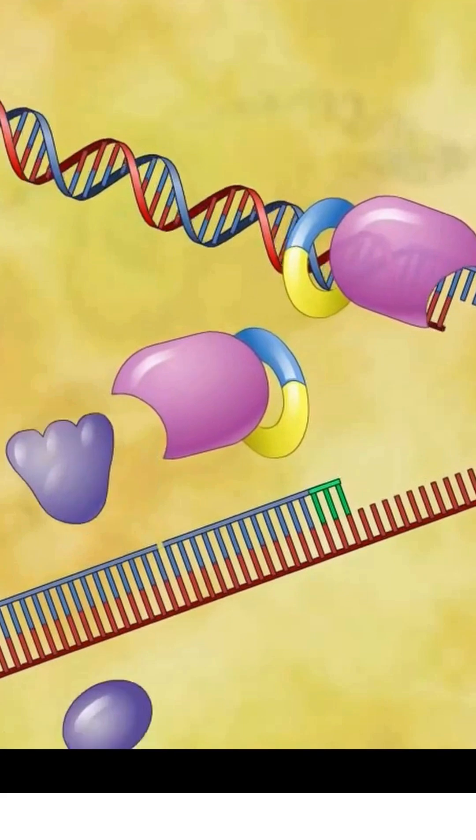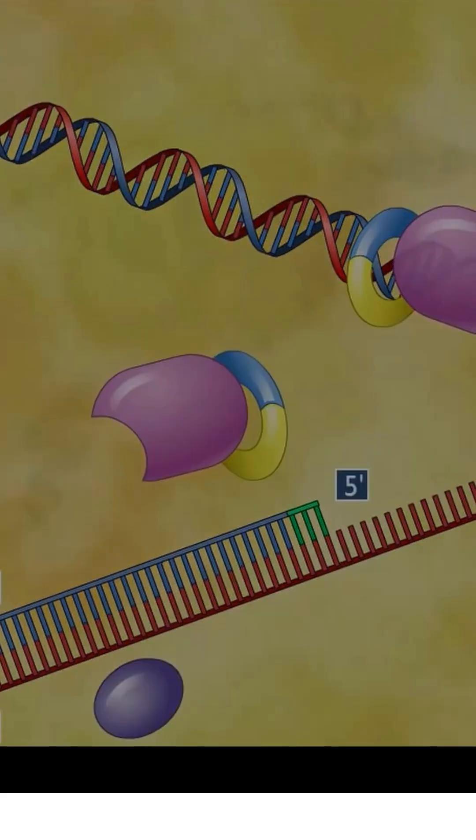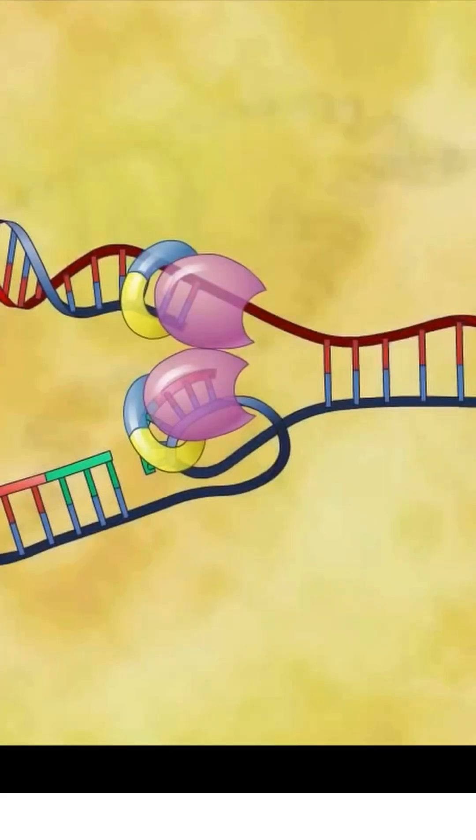For simplicity, DNA polymerase 3 has been depicted as separate units, one acting on the leading strand and the other acting on the lagging strand.